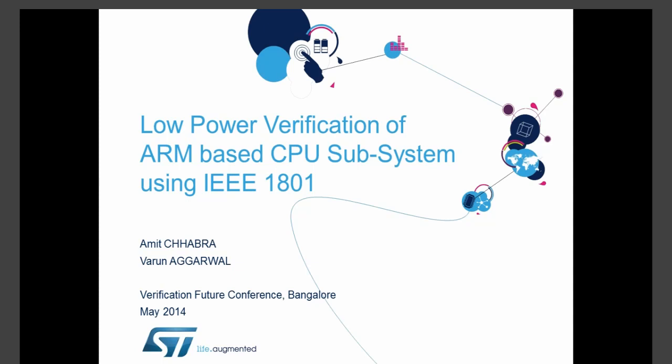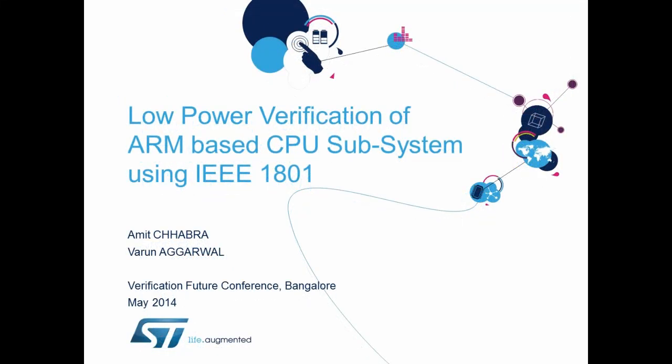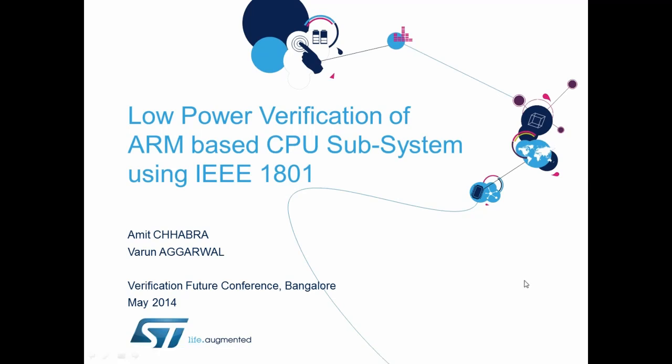Amit received a B.Tech in Electrical Engineering from the Indian Institute of Technology in Delhi in 2002 and joined the Memory Solutions Group at ST Microelectronics India in the same year. He has worked on memory design and is currently involved in the design of SRAM process sensors and adaptive memories, and is also a low power expert for memory power reduction at the architectural level.